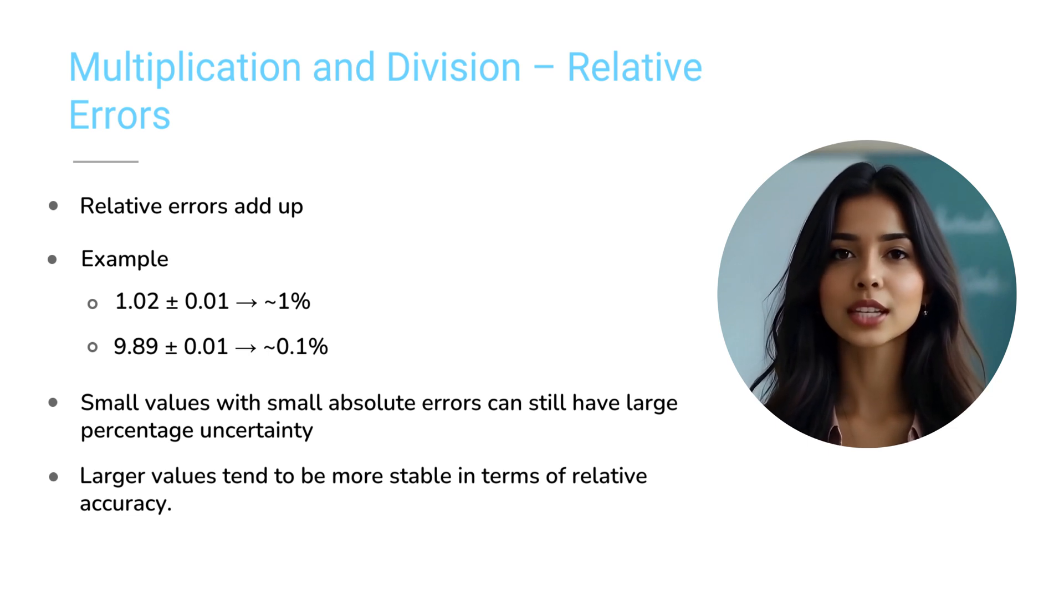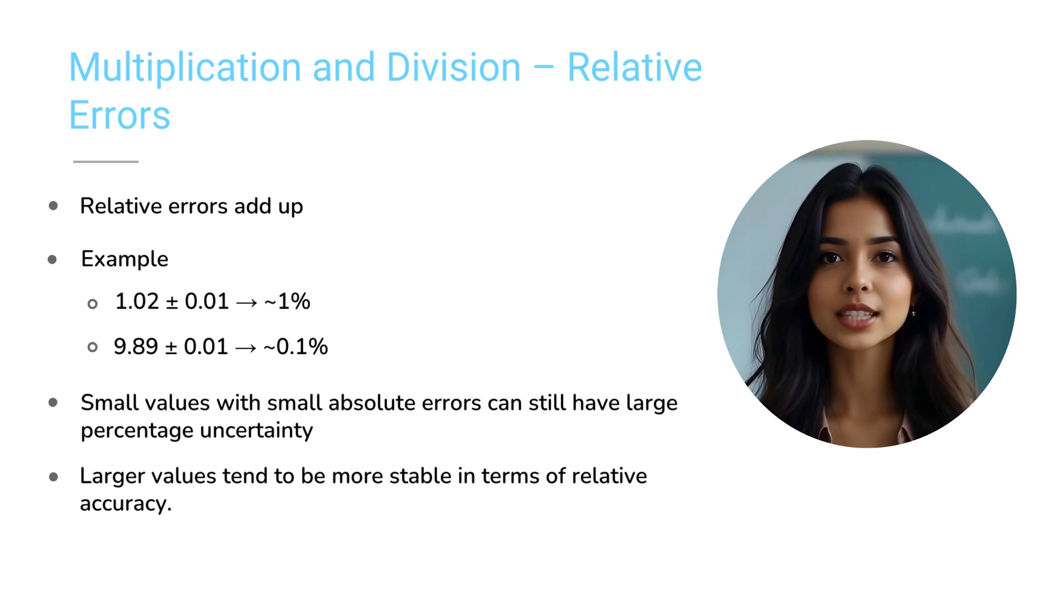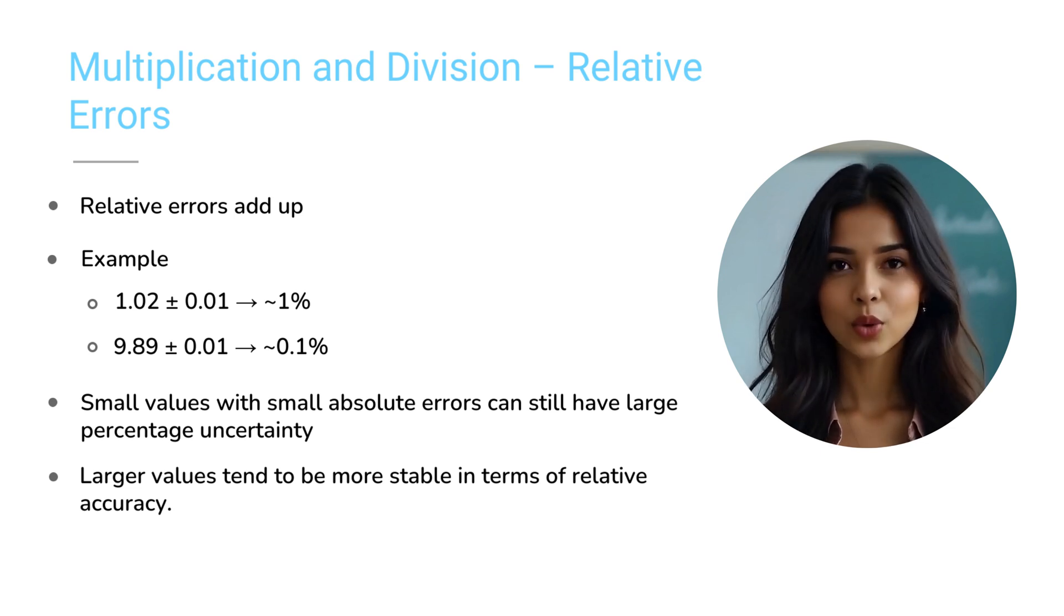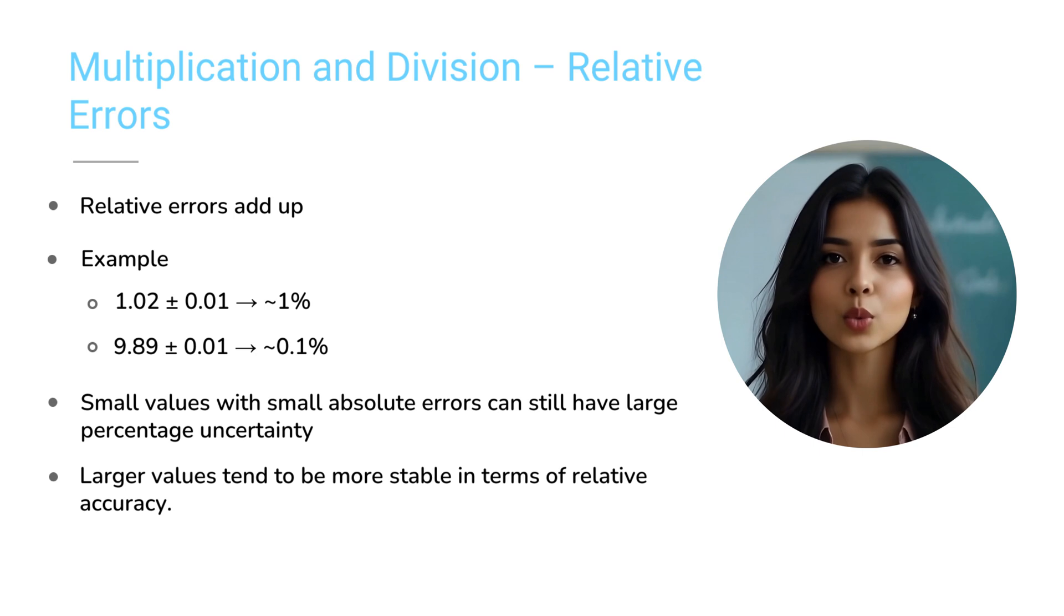Example 2: Another mass is, mass equals to 9.89 grams, plus or minus 0.01 grams. Relative error is 0.01 divided by 9.89 equals to 0.001, or about 0.1 percent.